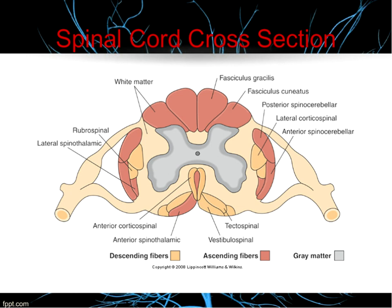We're moving to the spinal cord now. The spinal cord stems from the medulla and contains both white and gray matter. In the spinal cord, the gray matter is in the center — it looks like an H shape — and the white matter is on the outside. This is exactly opposite of the gray and white matter arrangement in the brain. It's also similar to the brain in that it's surrounded by the meninges — the dura, the arachnoid, and the pia layers.